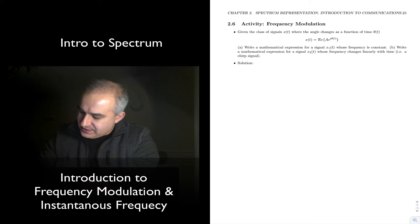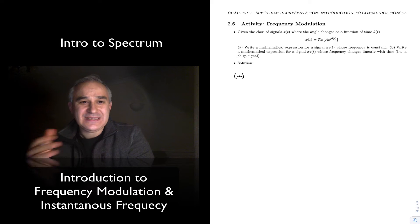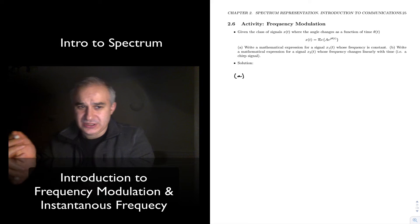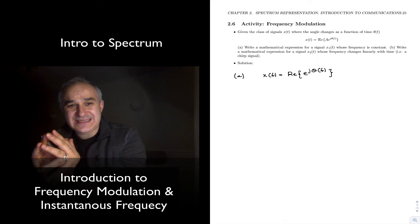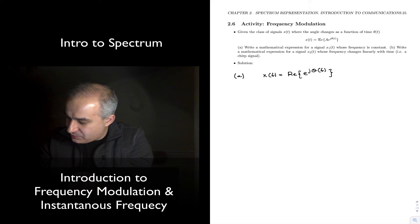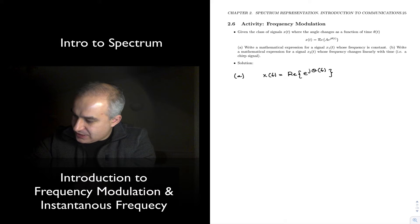For part A of this problem, we are asked to write a mathematical expression for a signal whose frequency is constant. First of all, x(t) equals the real of A times e to the j theta t. Frequency is actually defined as the derivative of the angle. So here we do have the angle. Let's put an amplitude also.